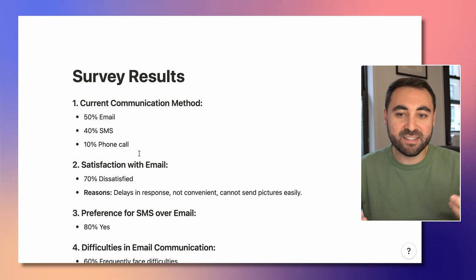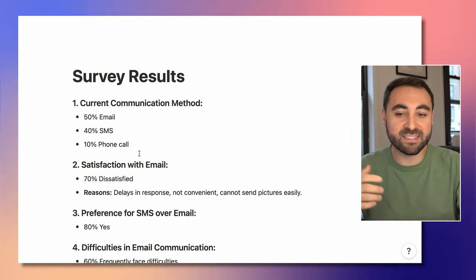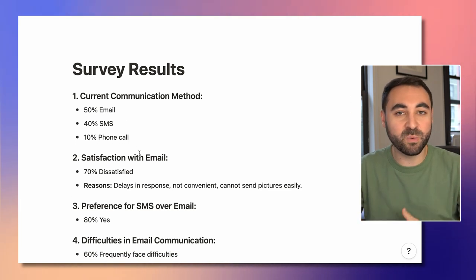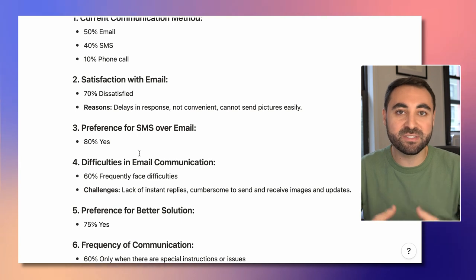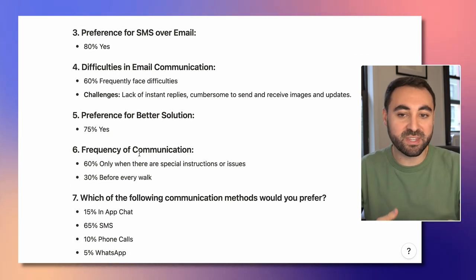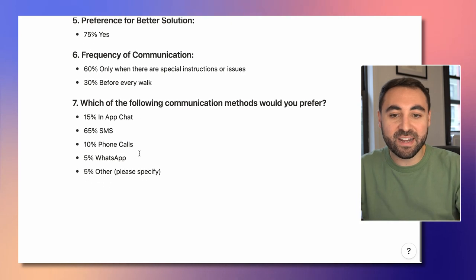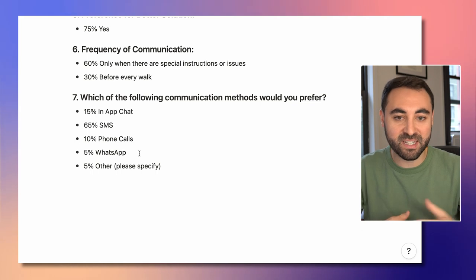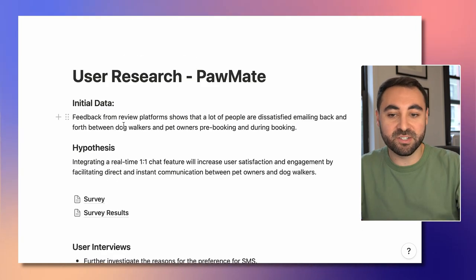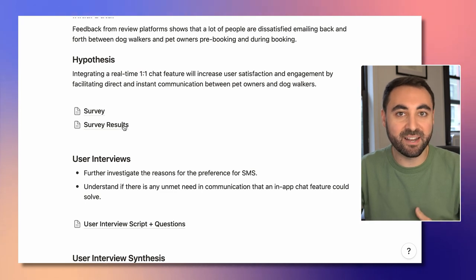Let's take a quick look at the results. Say I ran this survey and we see that 50% of our users are using email right now, 40% are using SMS, etc. But 70% are dissatisfied with email — pretty consistent with what we're seeing on the review sites. Do they have a preference for SMS over email? 80% would say yes. There's frequent difficulty experienced with email and a preference for a better solution. And finally, for the preferred communication method, in-app chat only got 15%, SMS got 65%, phone calls 10%, etc. So from this initial survey, we might find there's a preference towards SMS instead of live chat.